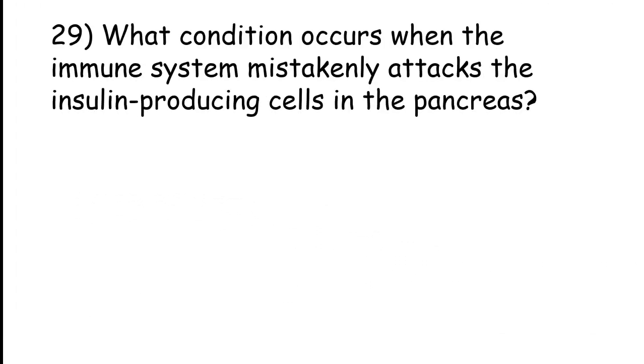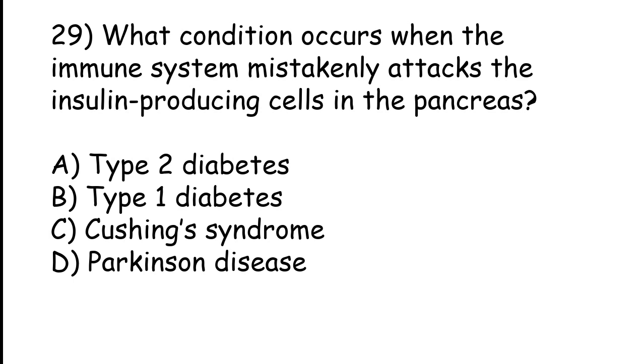What condition occurs when the immune system mistakenly attacks the insulin-producing cells in the pancreas? Type 2 diabetes, type 1 diabetes, Cushing syndrome, Parkinson disease. The correct answer is option B, Type 1 diabetes.